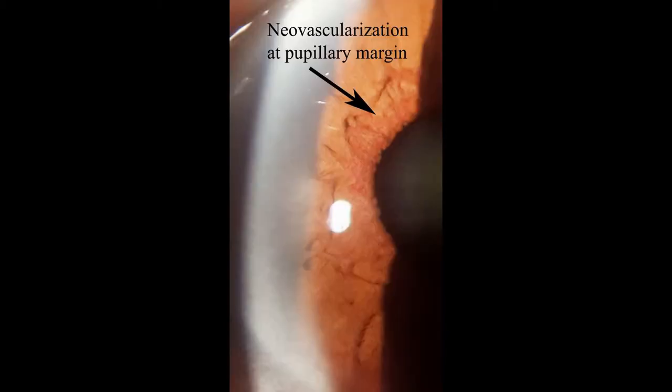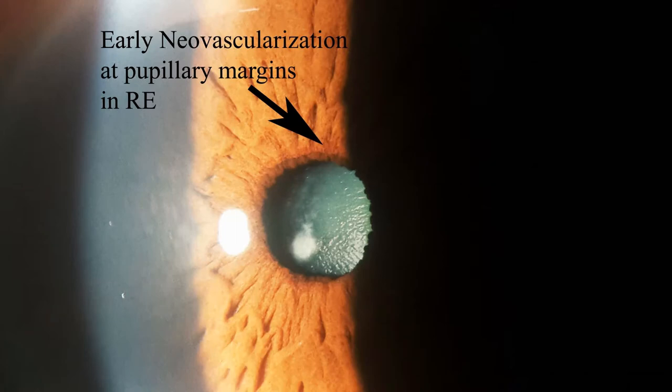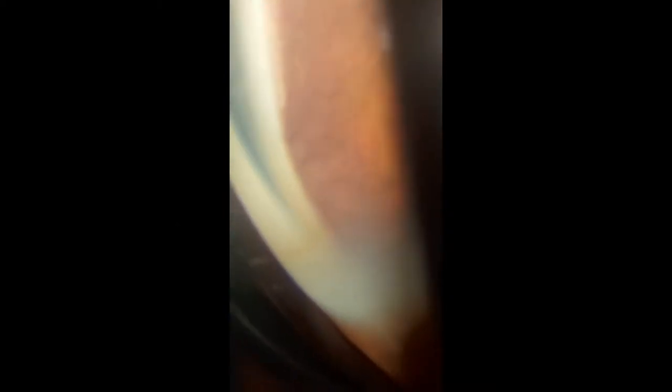Here is a patient with persistent hyaloid artery. In this gonioscopy video, the ciliary processes are clearly made out through the dialysis in a patient with angle recession and iridodialysis following blunt trauma. This is a patient with neovascular glaucoma; neovascularization of the pupillary margin is evident in this photograph. Gonioscopy video shows open angle with new vessel in the angle and couple of goniosynechiae.